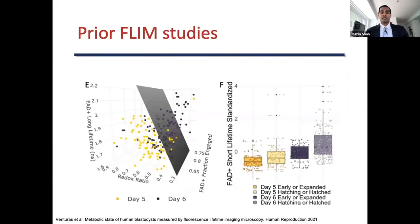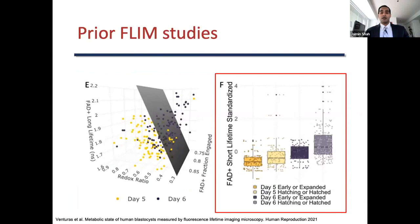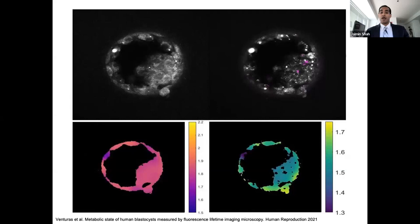We compared day 5 versus day 6 embryos and showed significant metabolic differences between these groups. You can see metabolic differences by embryo day and embryo stage. We also imaged blastocysts over a span of 36 hours and showed the FLIM parameters had continual metabolic variations over time during blastocyst development, and showed the spatial pattern of metabolic signatures between the inner cell mass and the trophectoderm, with some parameters increasing and some decreasing as embryos progressed past the early blastocyst stage. The color bars show the average photon arrival time for NADH and FAD in nanoseconds.